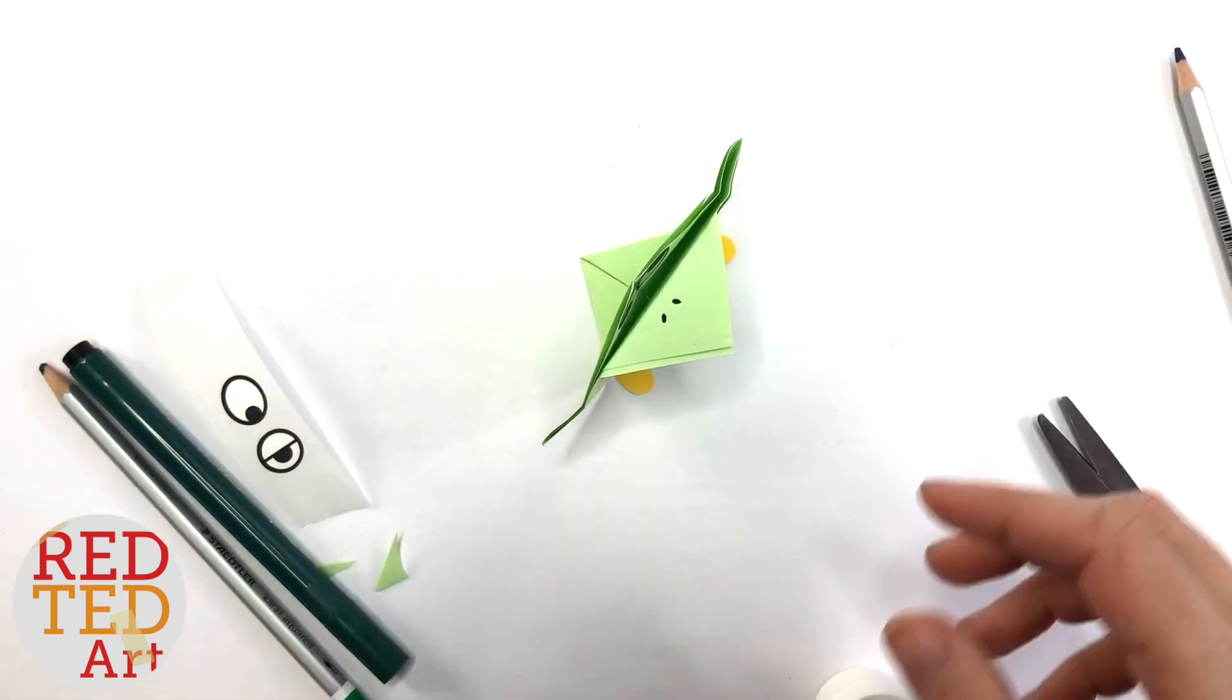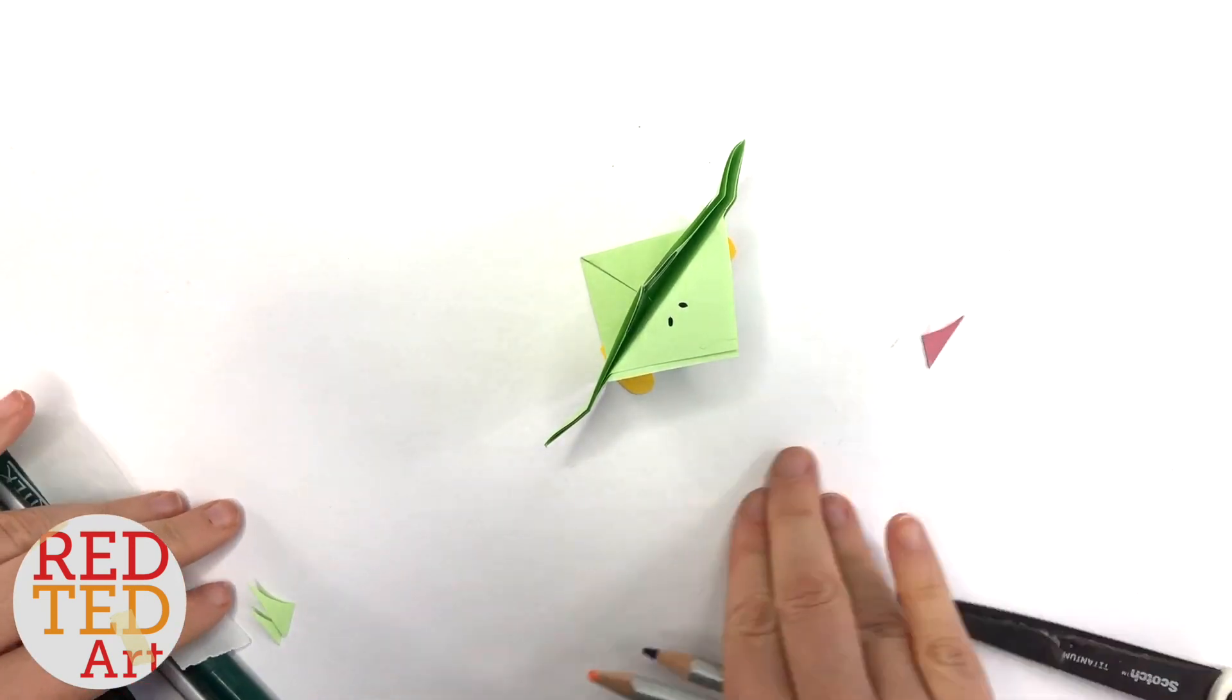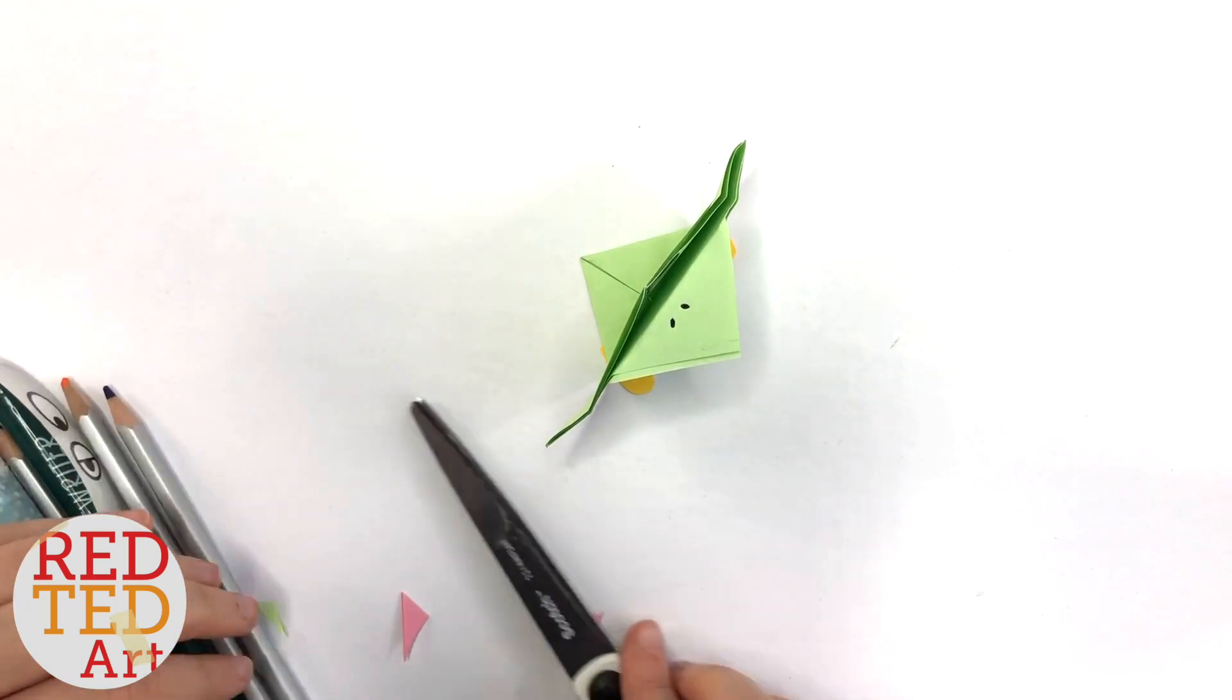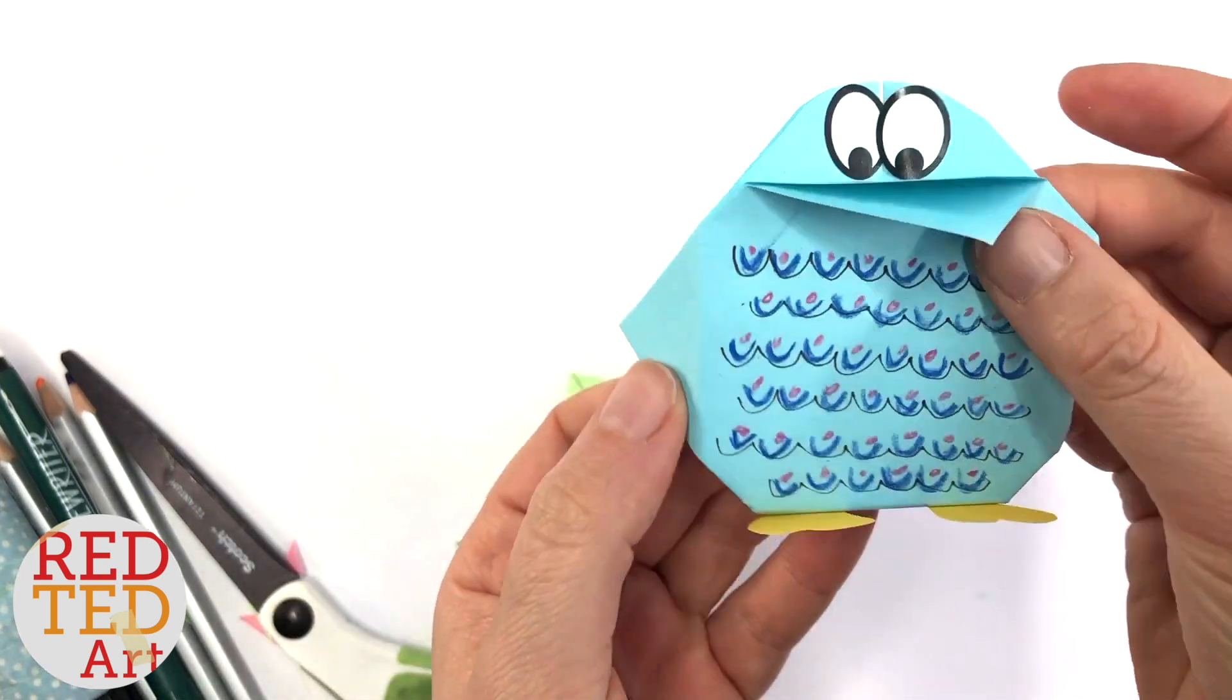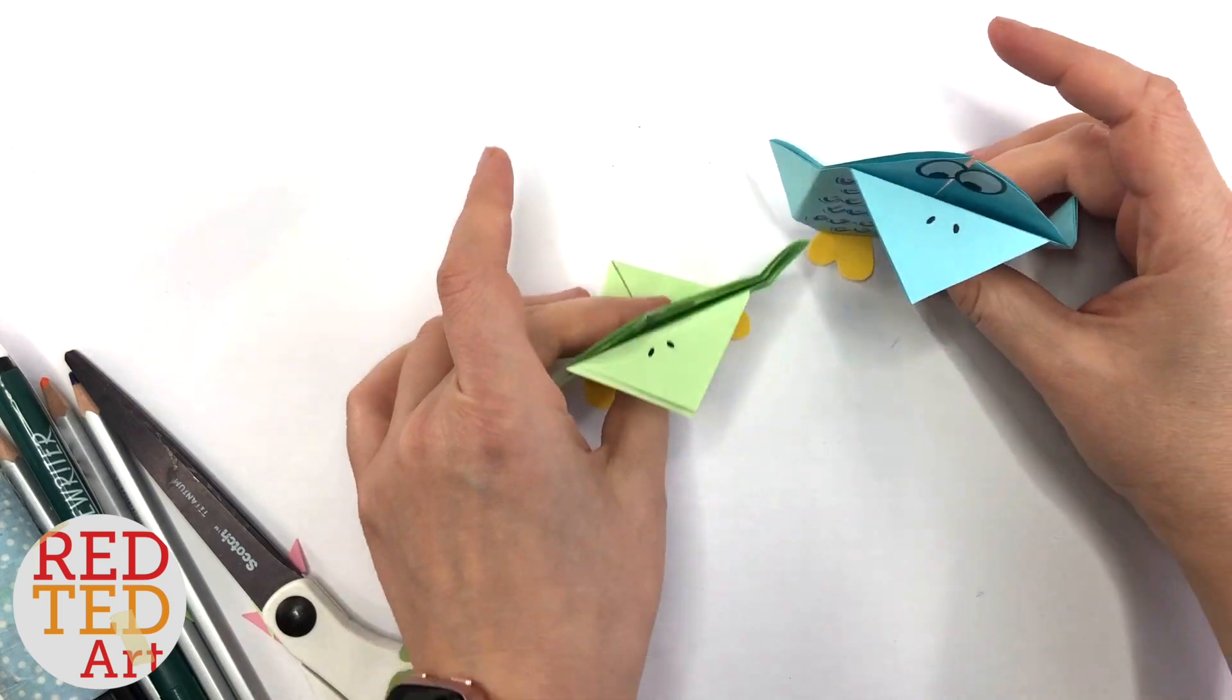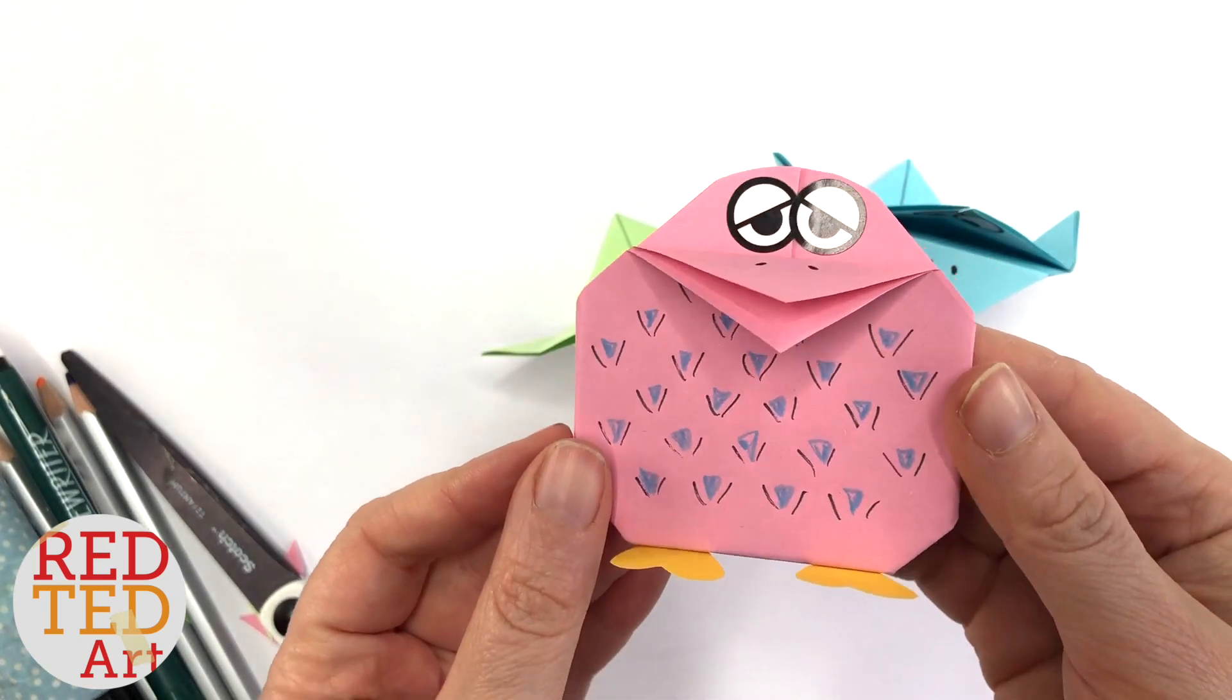And there you go, your little bird is finished. So let's have a look at the other ones. Move that all over. So I've got my green bird. Look at this blue one—he's really cute. I have a pink one. Let's have a look. This one's got chevrons on it.